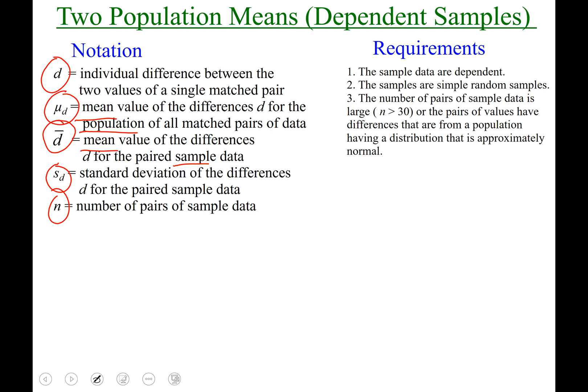And lowercase n is our number of pairs of sample data. Careful, it's tempting to think lowercase n is all the sample data, but it would be each pair of sample data gets counted as one value as far as calculating lowercase n.